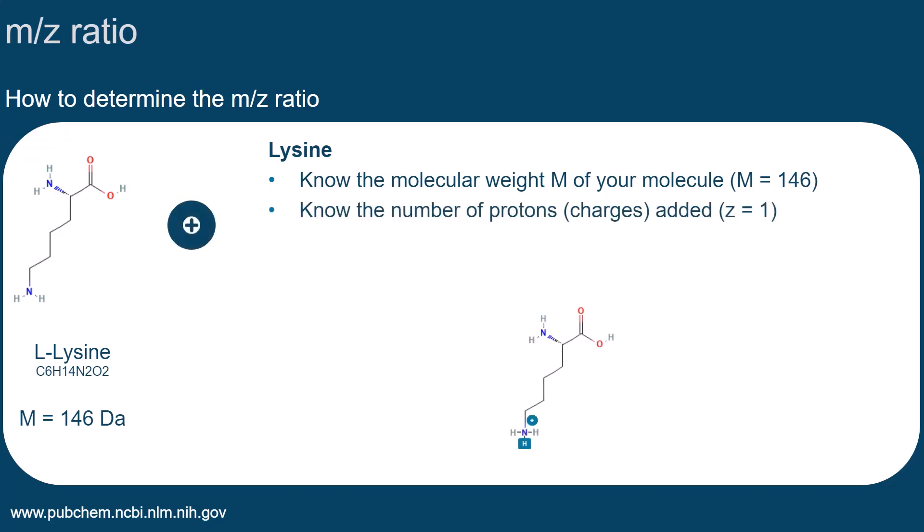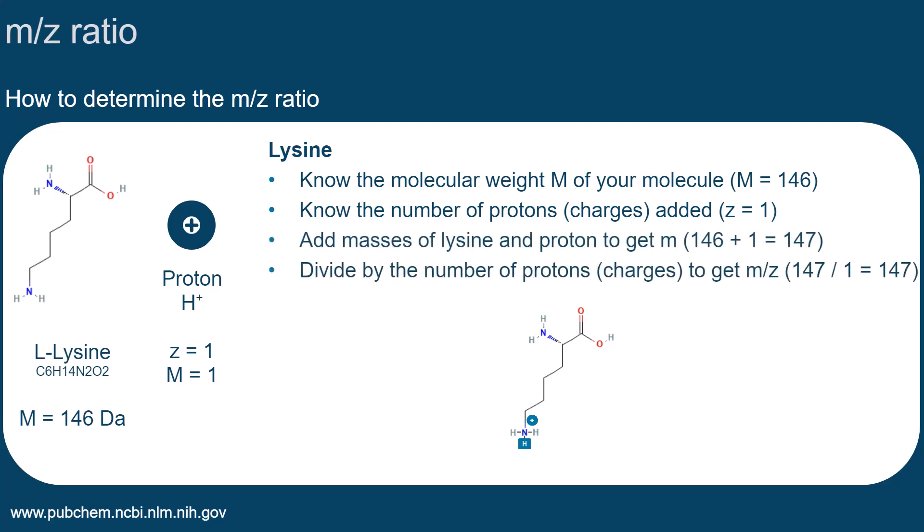In the positive ion mode, we can assume that lysine adds a proton that has a charge Z equal to 1 and a mass of about 1 Dalton. Now we need to add the masses of lysine and the proton. Then we need to divide by the charge.